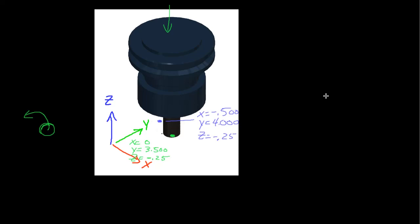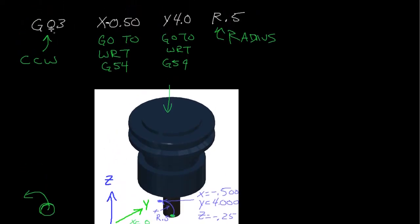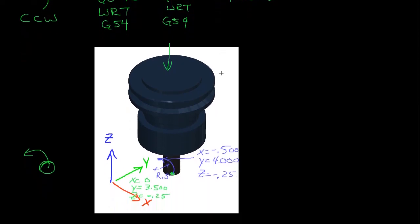From its current position it's going to follow an arc with a radius of 0.5 inches to that position at X equals negative 0.5. It moves in the counterclockwise direction with the G03 command — from the starting point going to X negative 0.50, Y 4.0 with respect to G54, along a radius of 0.5 inches. That concludes the video on circular interpolation motion.